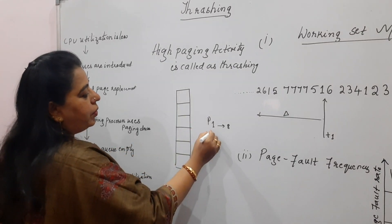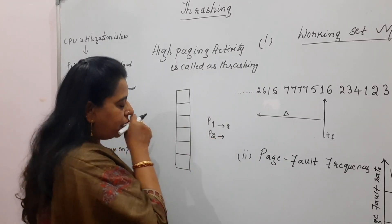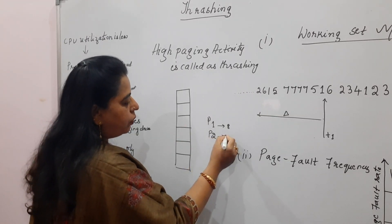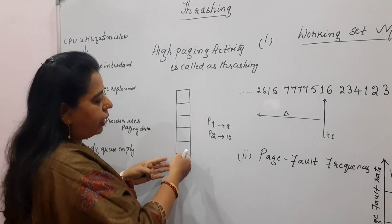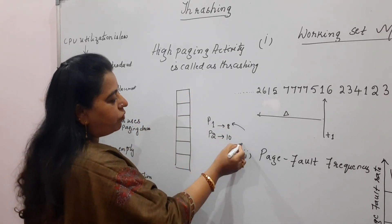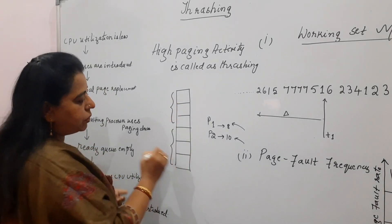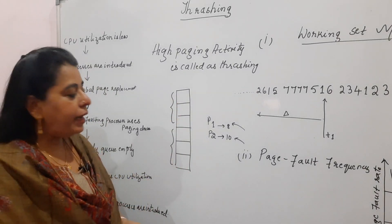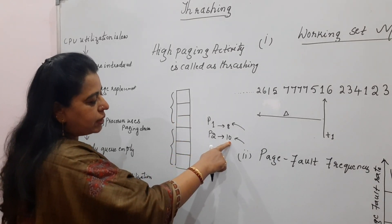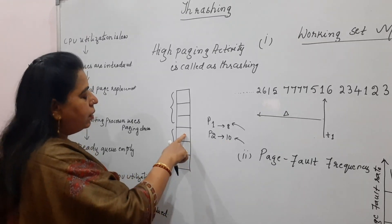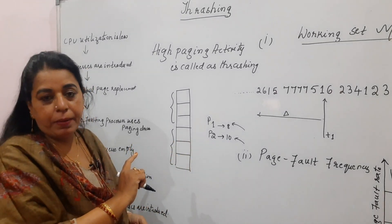Suppose another process, P2, gets loaded into main memory. P2 also needs some pages — let us say P2 has totally 10 pages. Now the total frames will be split: a few frames go to P1, a few to P2. Let us say P1 got 3 frames and P2 also got 3 frames. There will be page faults happening for P2 because P2 has 10 pages but only 3 frames are given — definitely page faults will happen.